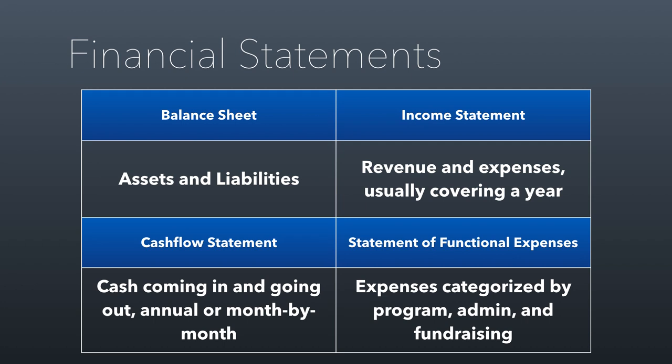These three — balance sheets, income statements, and cash flow statements — are the three core sets of financial statements that most organizations have. Where nonprofits are a little bit different is that from an accounting perspective, they are also expected to do something called a statement of functional expenses. I'll show you this on the 990, but it's essentially where expenses are categorized according to program costs, administrative costs, and fundraising costs. We're not going to go into these four financial statements in more detail here in the recorded lecture, because we're going to do this together in class and look through these kinds of financial statements and explore them together.